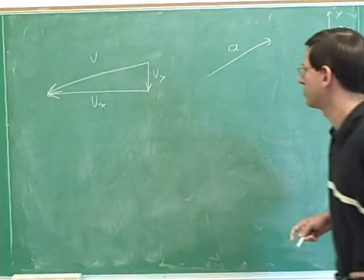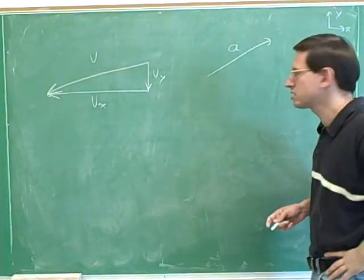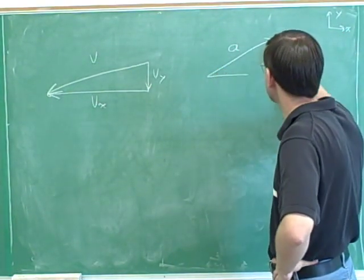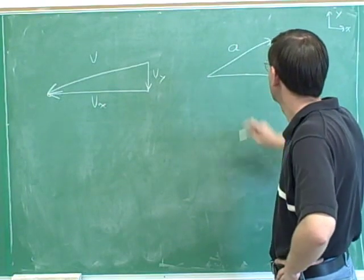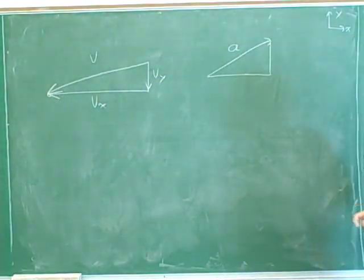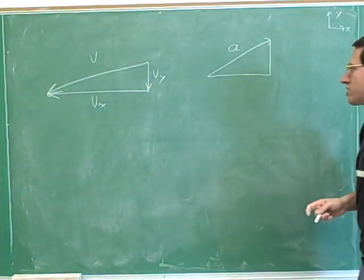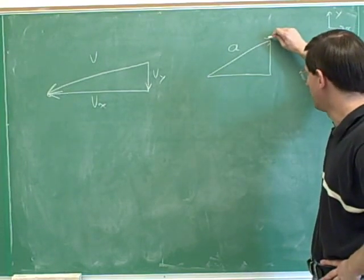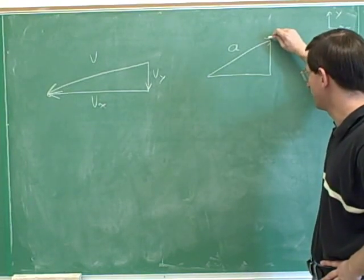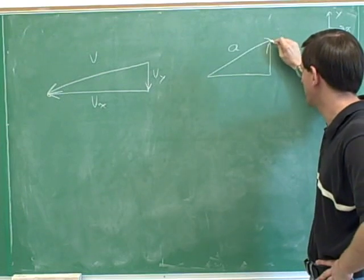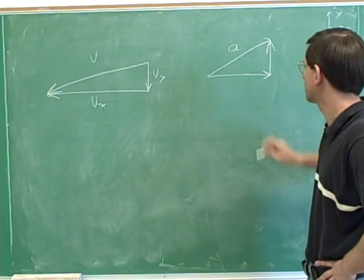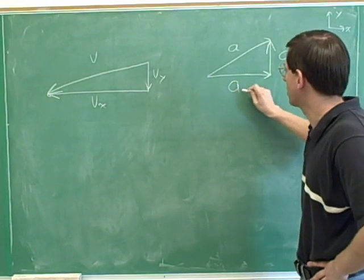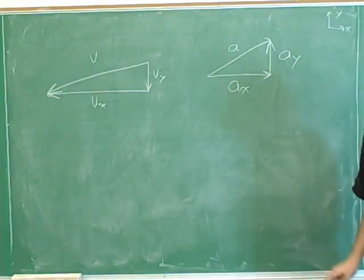Now let's do the same thing for the acceleration — let's break that into components. Draw a right triangle that uses the overall acceleration as the hypotenuse. We have to put in arrows on the legs. The overall vector is pointing up and to the right, so the components are pointing up and to the right. And we have to label them. Please make sure that you're always labeling all three sides of each triangle.